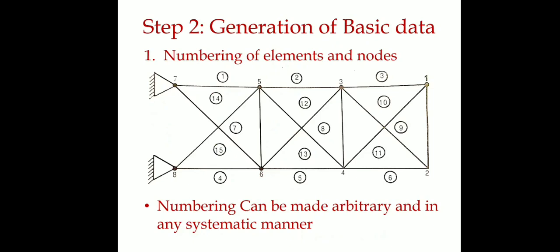Step 2 is the generation of basic data. In Step 2, the first stage is numbering of elements and nodes. The elements in a discretization are subdivided and numbered sequentially.